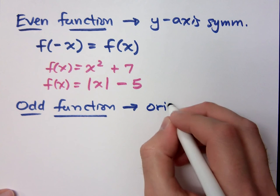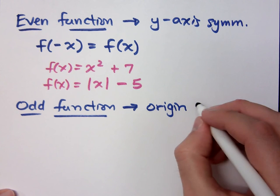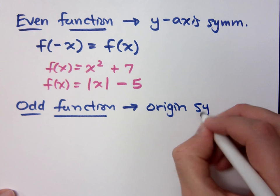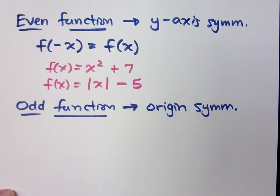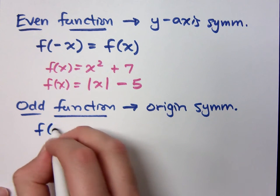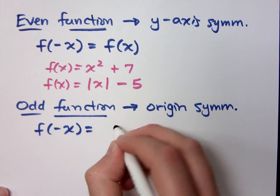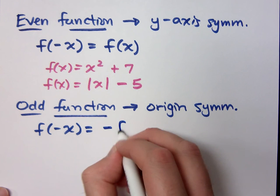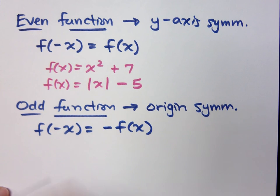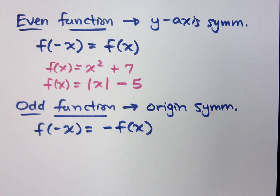So when we're talking about odd functions, we're talking about those that have origin symmetry. What that means is that f of negative x equals negative f of x. If you plugged in negative x, and then took the opposite — the negative of the function — those expressions should be the same.